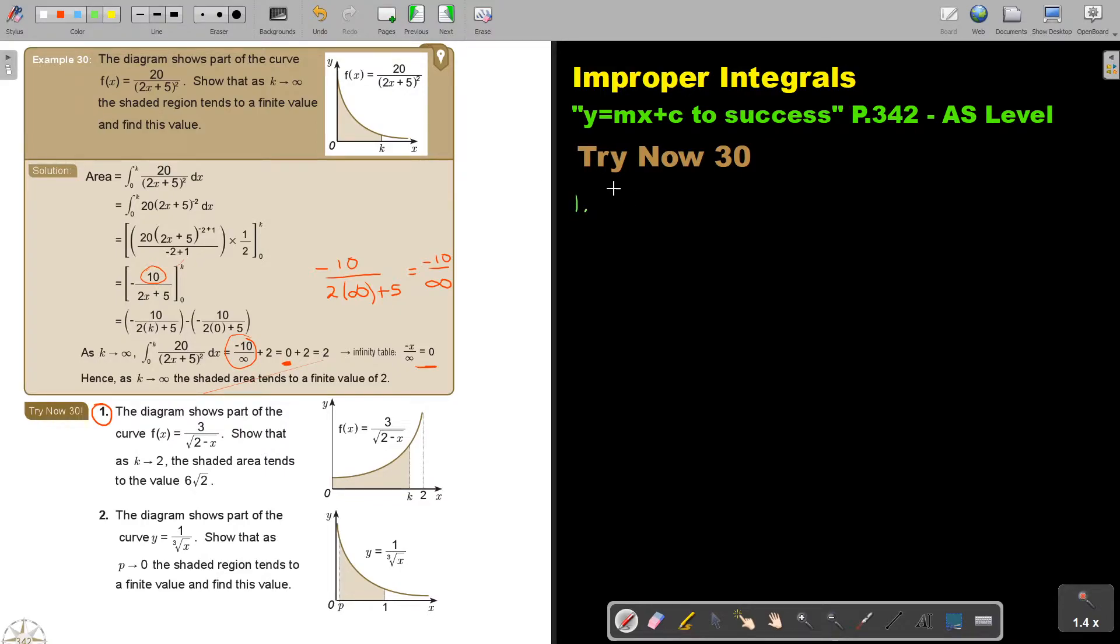Number 1. I can write it as square root 2 minus x. If I'm still 1/2, I can write it as 3, bring it up 2 minus x to the power of 1.5. I didn't write it into integration yet. The diagram shows part of this. Show that if K is striving now to 2, the shaded tends to a value 6 square root 2.